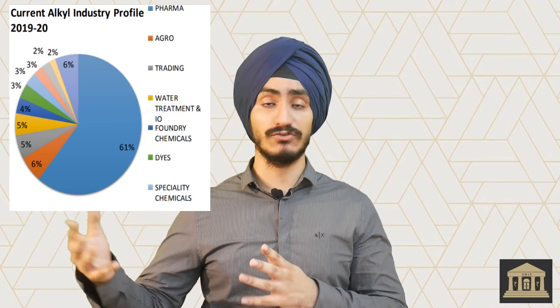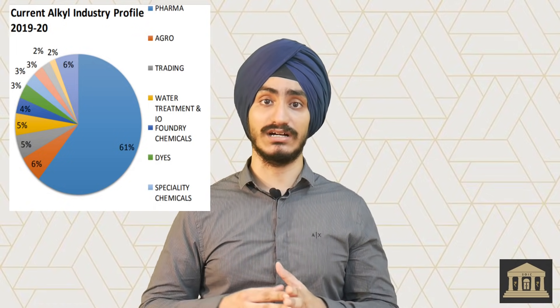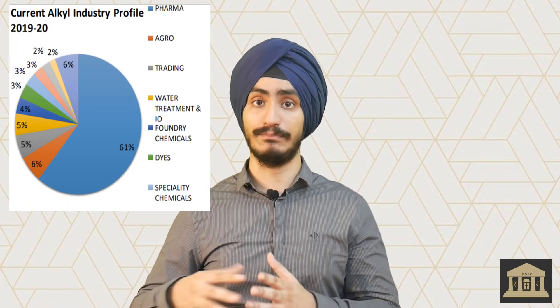Referencing Peter Lynch's framework, Amines fall into the category of industries that gain from other industries — since pharmaceuticals and agrochemicals are large consumers. About 61% of sales go to pharma and 10-15% to agrochemicals. Major clients include Dr. Reddy's Laboratories, PI Industries, and other large players. Importantly, no single customer accounts for more than 5% of sales, showing excellent customer diversification.